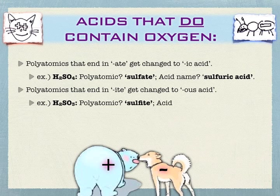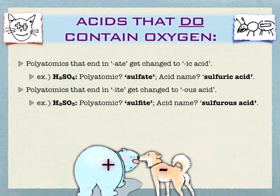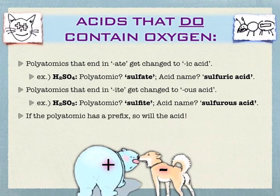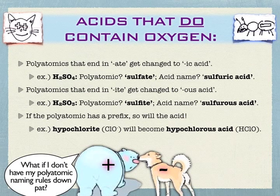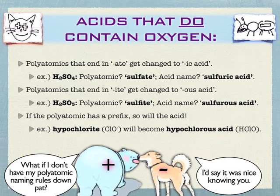Let's take sulfite instead of sulfate and change that to sulfurous acid. Notice there's no hydro on any of these because they contain oxygen. Sulfite still has the same negative 2 charge, so it still gets two hydrogens. Now, if the polyatomic has a prefix, those prefixes come along — don't get rid of those. For example, hypochlorite, if it became an acid, would become hypochlorous acid. We add the one hydrogen that's needed, but the hypo stays. Again, if you don't have your polyatomic rules down, adding this extra layer of rules on top is going to really mess you up.